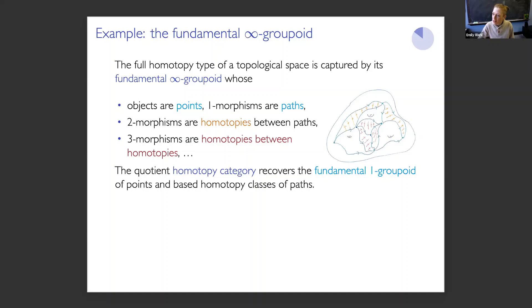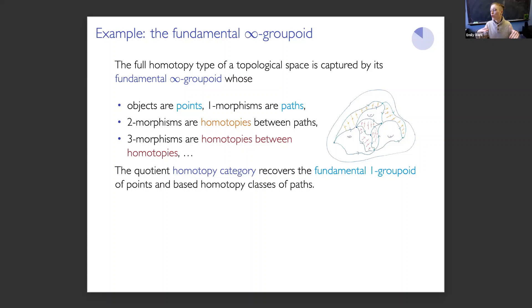You'll note in contrast with the fundamental group: because the one-morphisms are paths rather than homotopy classes of paths, composition is no longer a strictly well-defined binary associative operation. Instead, we interpret a homotopy as witnessing that some path is a composite of some other paths. This infinity category, like all infinity categories, has a quotient that is an ordinary category — the homotopy category. In this case, it recovers the fundamental one-groupoid, equivalent to the fundamental group if your space is path-connected. We can think of this as an enhancement of a more classical invariant of a space. The fundamental infinity groupoid captures the full homotopy type, while the fundamental one-groupoid only captures the one-type.